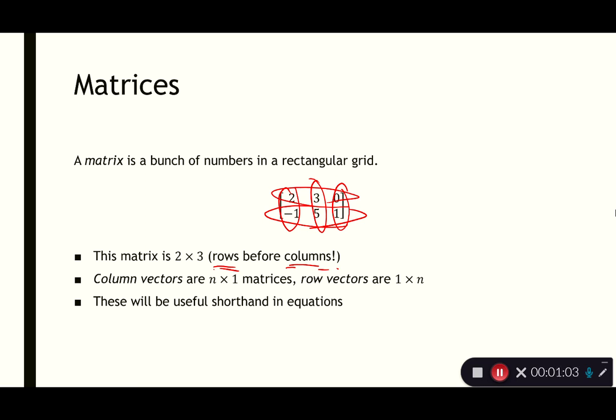A column vector and a row vector are just special types of matrices. There are particularly thin matrices that we could think of as a vector, or particularly long matrices that we could think of as a vector instead. And when we talk, for example, about the chain rule and stuff like that, these notions are going to be particularly important.